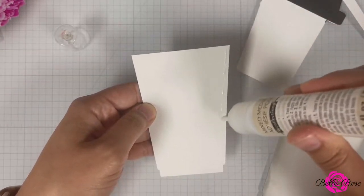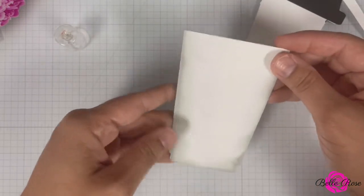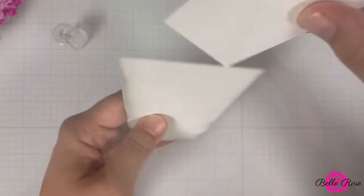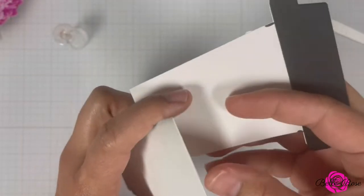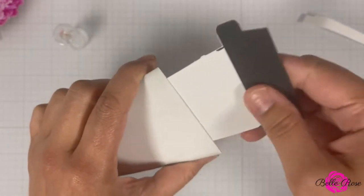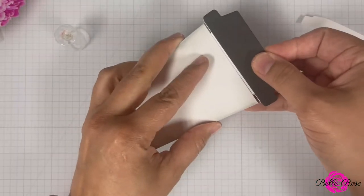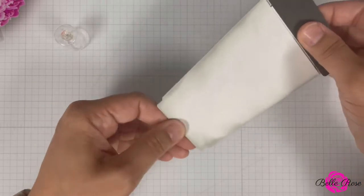Now I'm using adhesive glue to adhere the front and the back of the coffee cup base together, but you can feel free to use adhesive tape. I'm now going to do a test with the insert to make sure that it fits inside of the coffee cup base and that I do not need to make any adjustments.